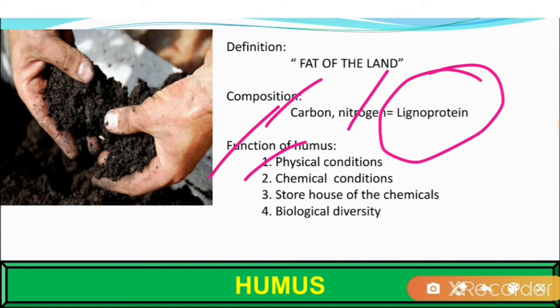The functions of humus are as follows. First, it maintains and improves the physical condition of soil, making it soft and mellow. It increases the water-holding capacity and aerates the soil, making the soil sticky and resistant to erosion. The second function is that it maintains chemical conditions of the soil, such as the solubility of soil rock minerals, oxidation-reduction reactions, and the buffering capacity.